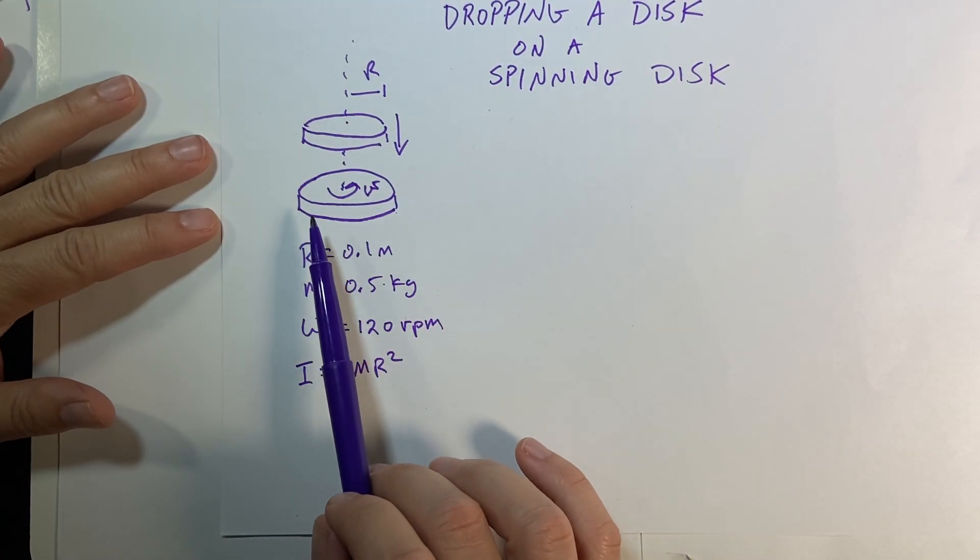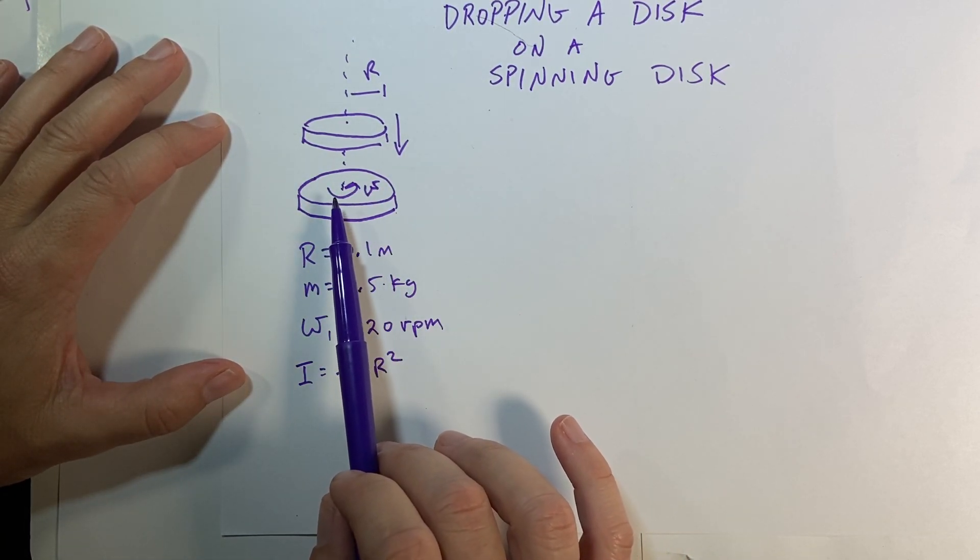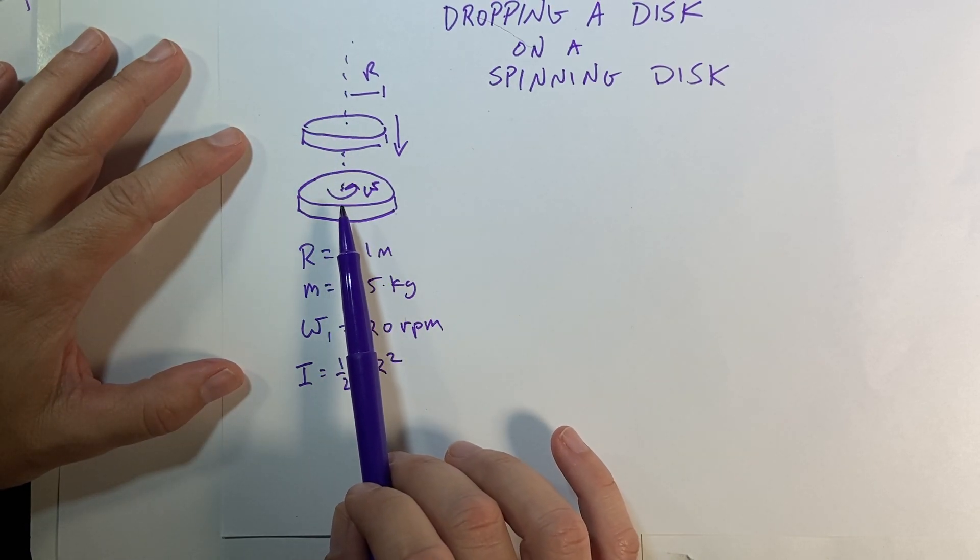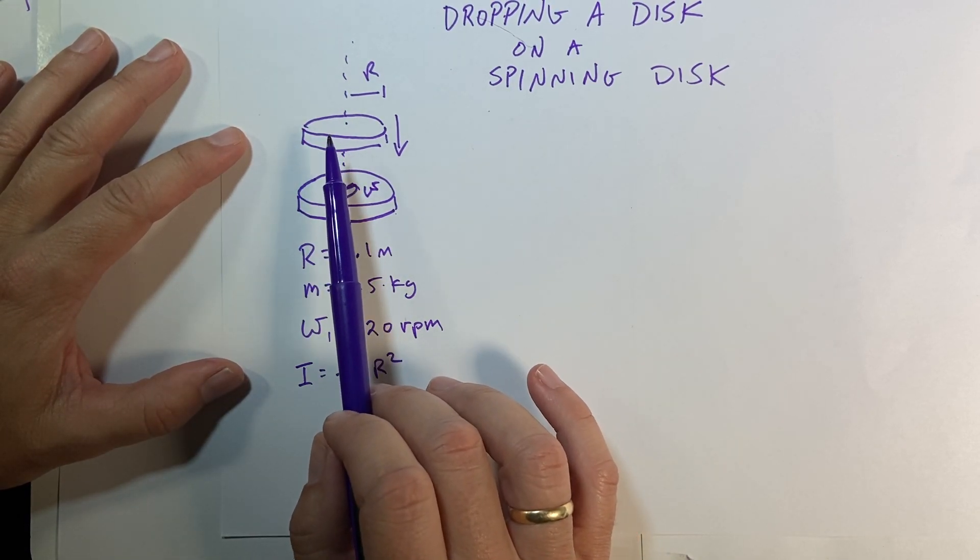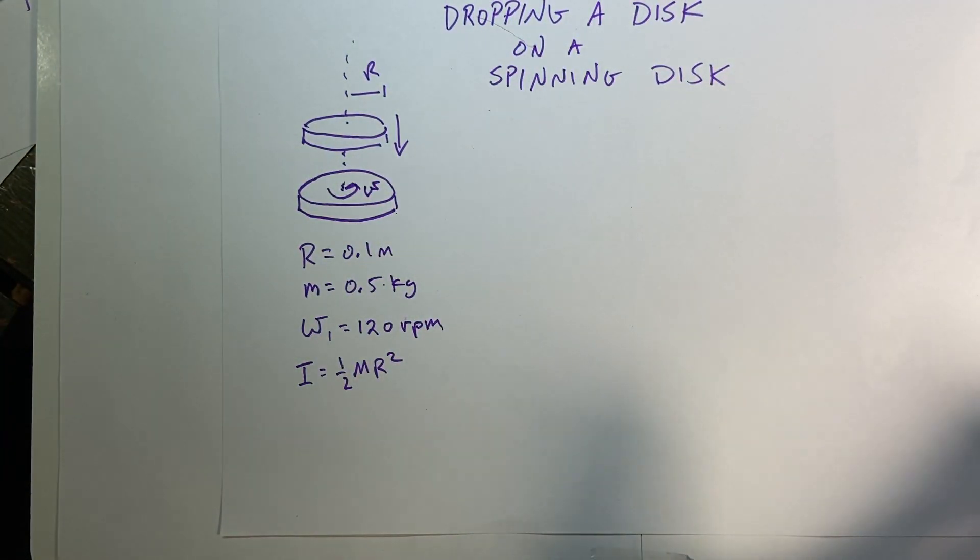Okay, here's the problem. I have a disc and it's spinning. And then I drop an identical disc on top of it. And this disc was not spinning. And then they rub together and they reach some constant speed.